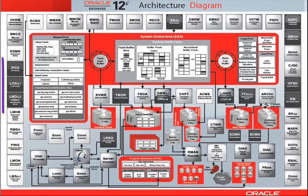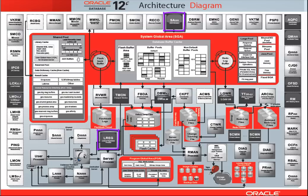Darker square elements are new processes introduced with Oracle Database 12c. For example, LREG, the listener registration process; SA, the SGA allocator; or RM, the RAT masking slave.